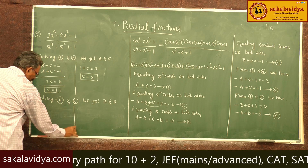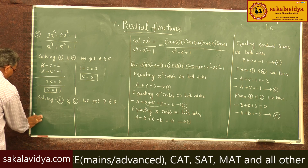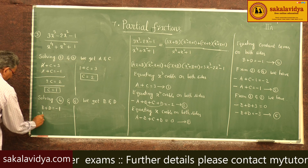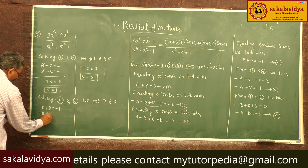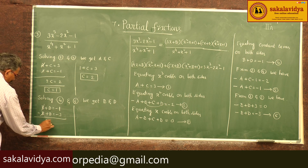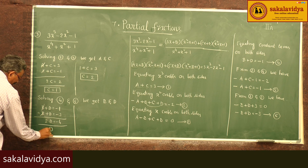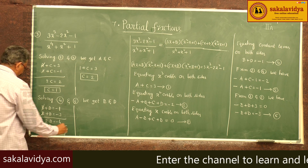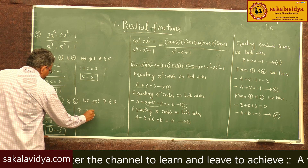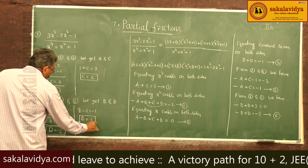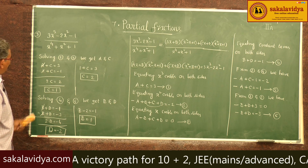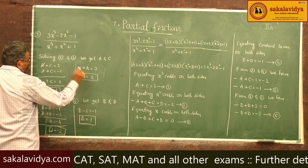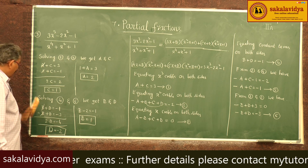Solving equations 4 and 6: b + d = -1 and -b + d = -3. Adding these two: 2d = -4, so d = -2. Substituting d = -2 into equation 4: b - 2 = -1, so b = 1. Therefore a = 2, b = 1, c = 1, d = -2.